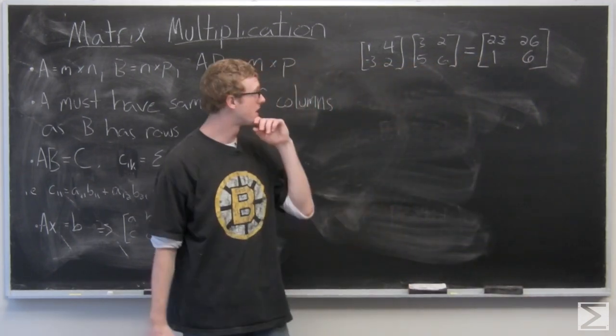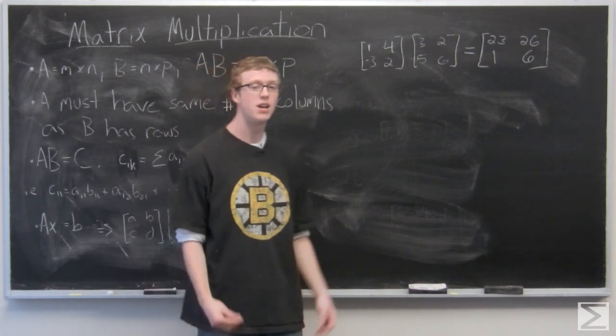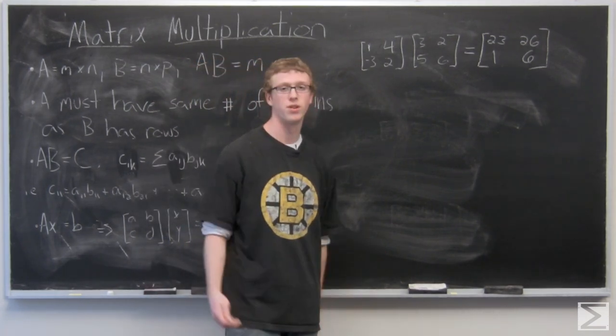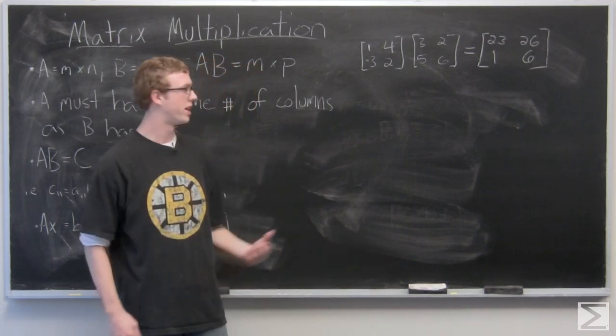So you can see it's fairly simple for square matrices. It's just going to result in another square matrix of the same size. But now let's take a look at an example with some different size matrices. Let's say a 3x2 and a 2x1.